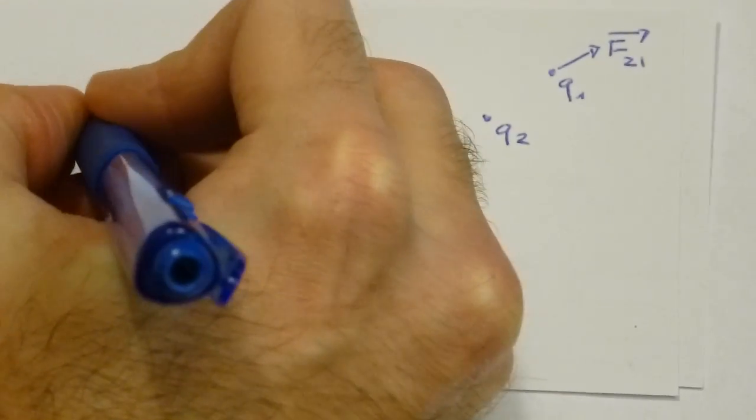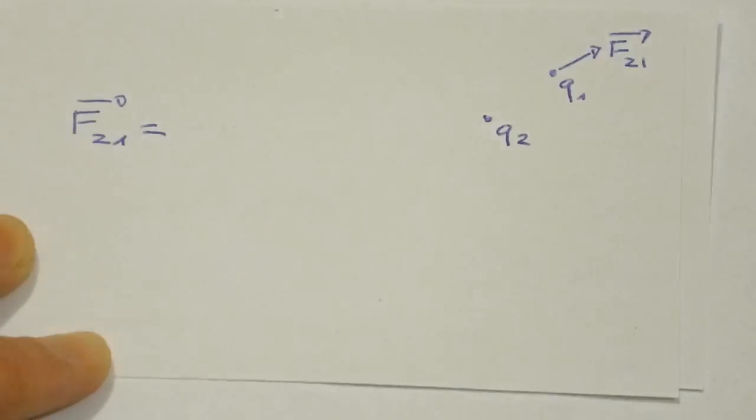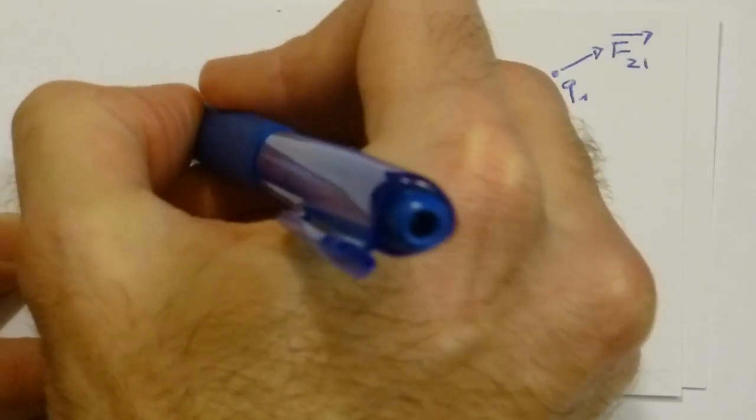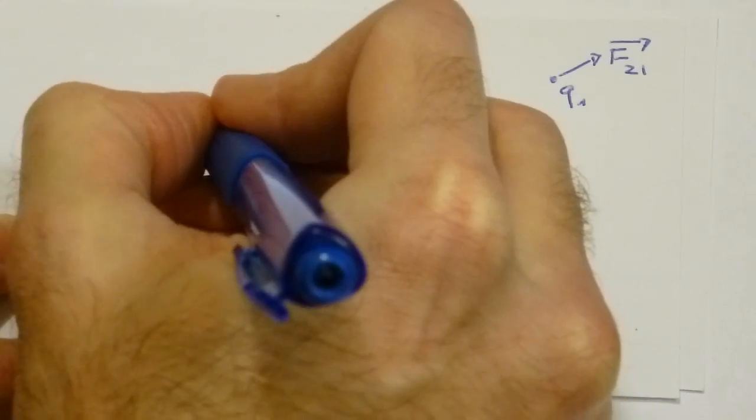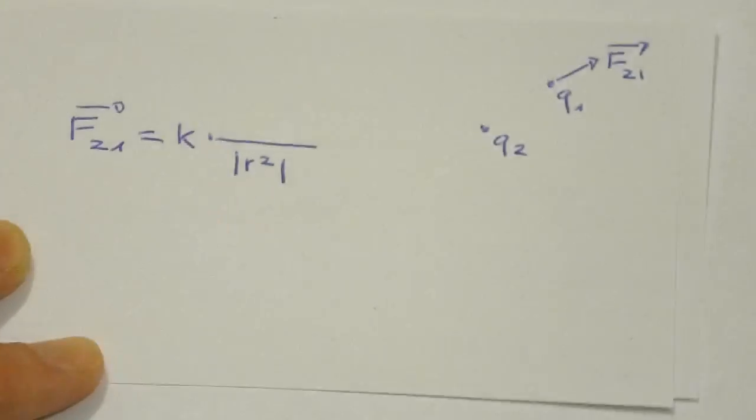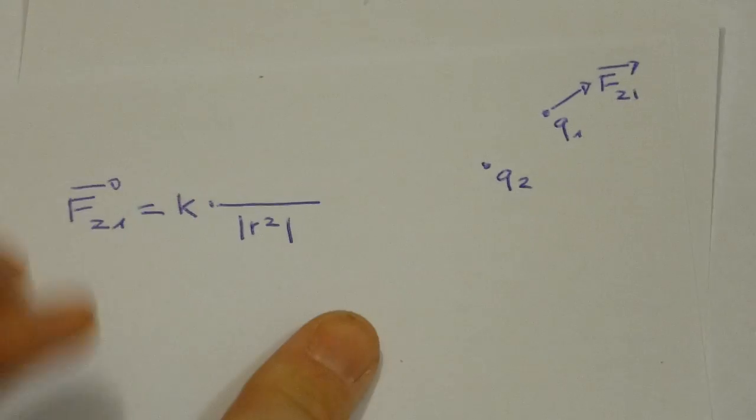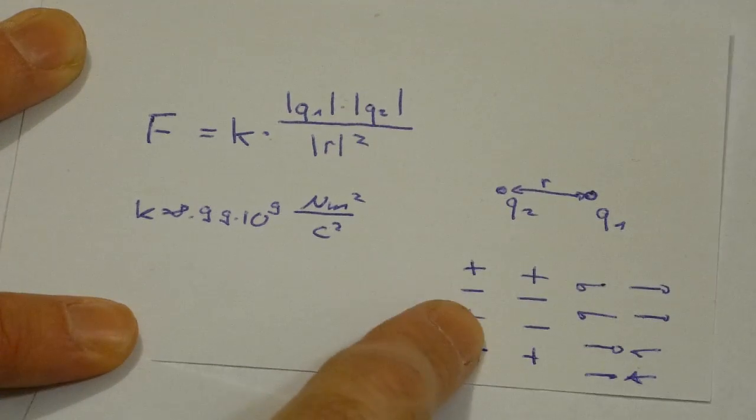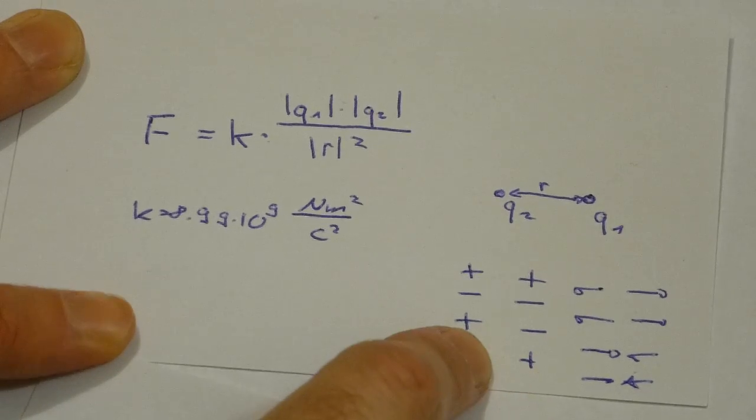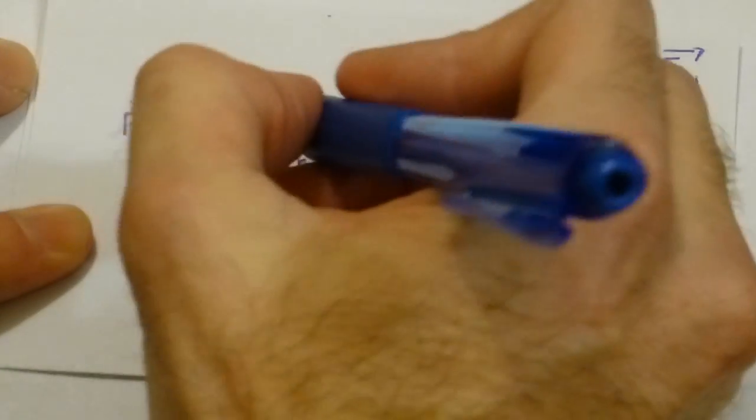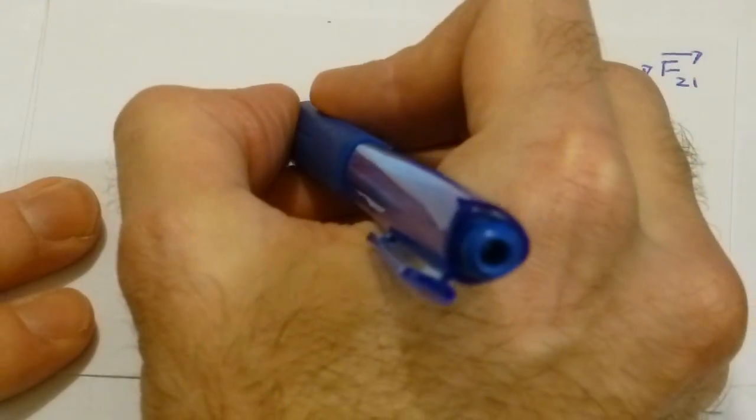So our new law should read F2 on 1 equals something. The magnitude will still depend on the electrostatic constant and will become smaller if the distance becomes bigger. Before we had the absolute values of the charges and then we used the rule that different charges attract and same charges repel to find the direction. We can do this directly if we just multiply it by the charges.